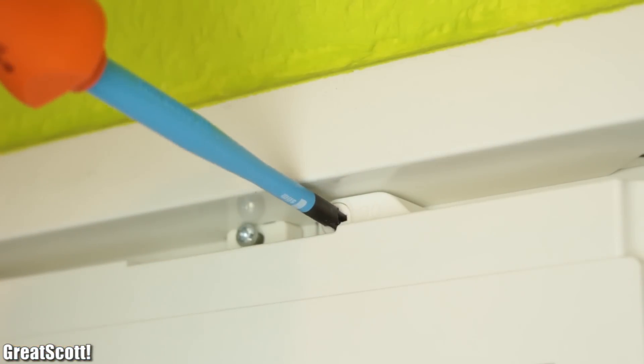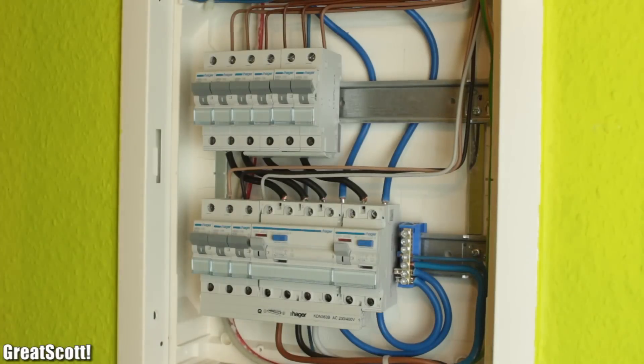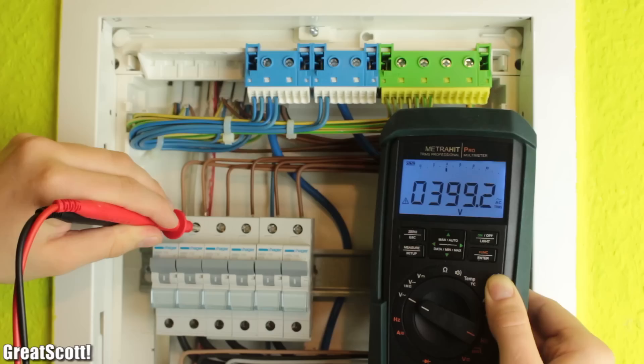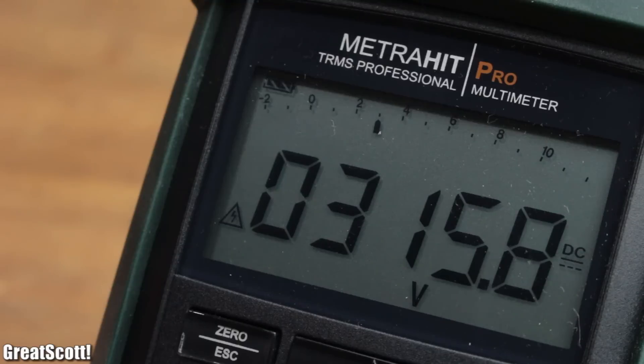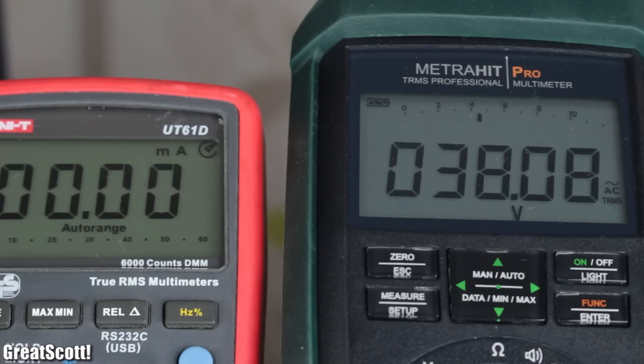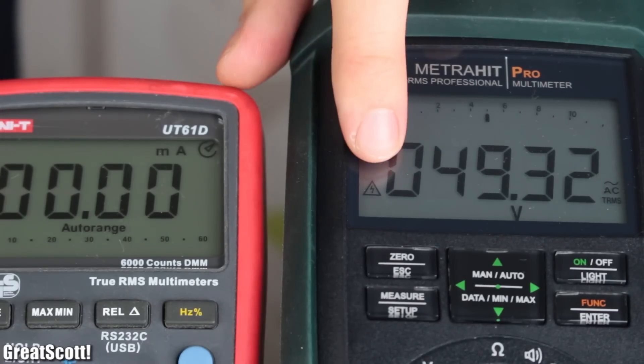Working with electronics in any form can be dangerous sometimes. Mains AC voltage and even high enough DC voltage have the potential to kill you. But the question is, at which voltage value does it get dangerous?